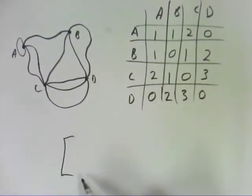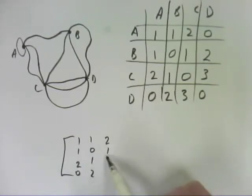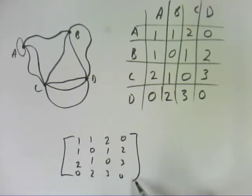From there, we can create a matrix: 1, 0, 1, 2, 2, 1, 0, 3, 0, 2, 3, 0. So there we have our matrix from that diagram.